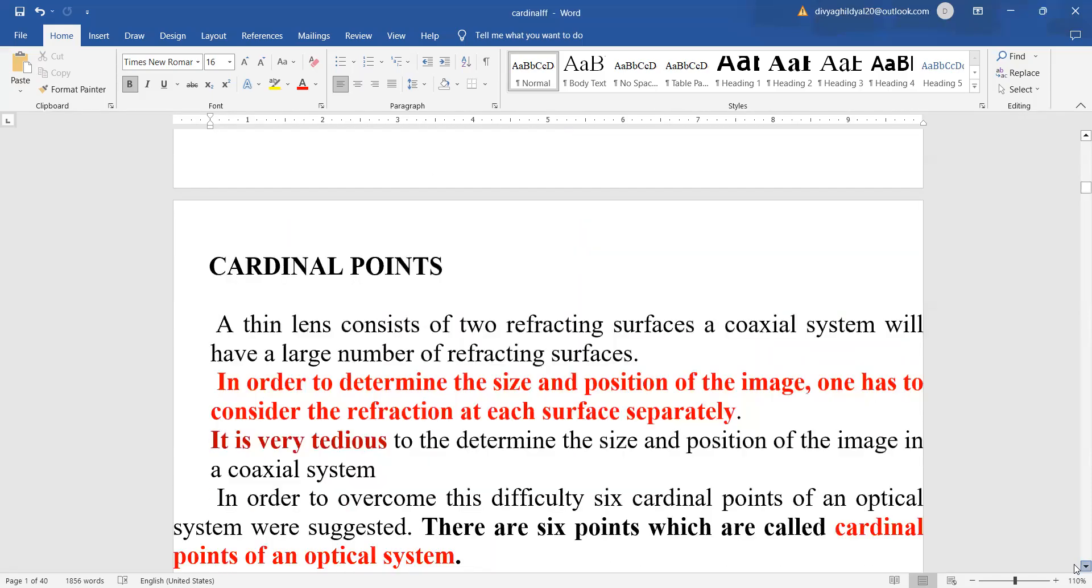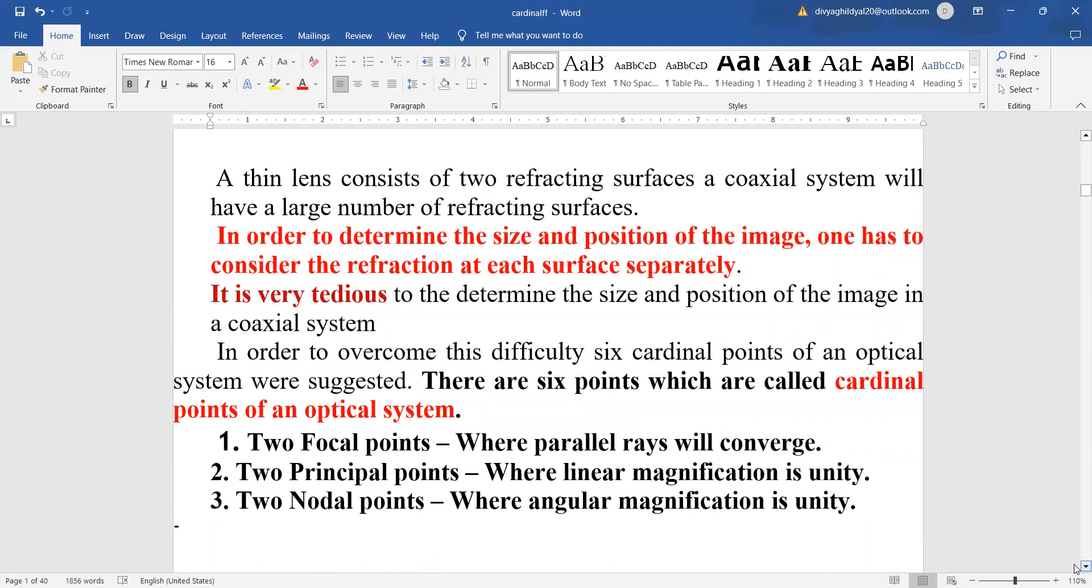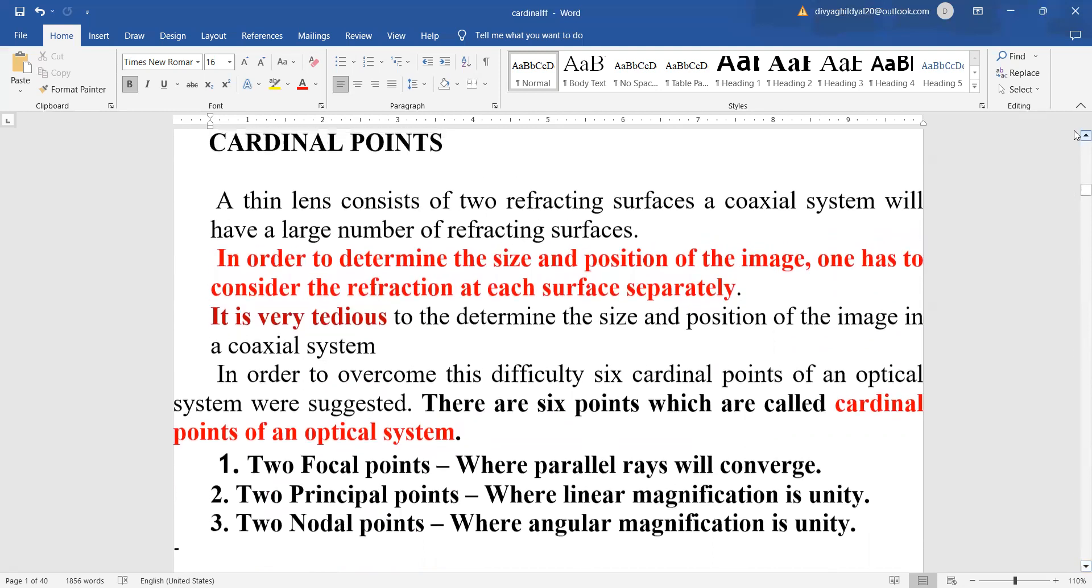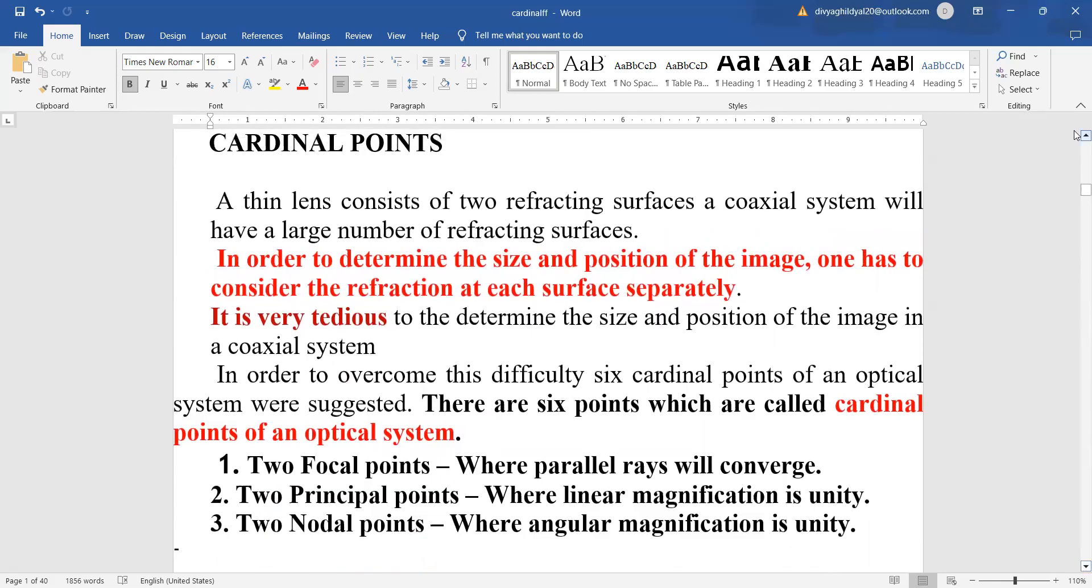What are cardinal points? A thin lens consists of two refracting surfaces in a coaxial system with a large number of refracting surfaces. To determine the size and position of the image, one has to consider the refraction at each surface separately. This is a very lengthy process, so to simplify it and find the position of image in a coaxial system, we find the cardinal points for that specific system.